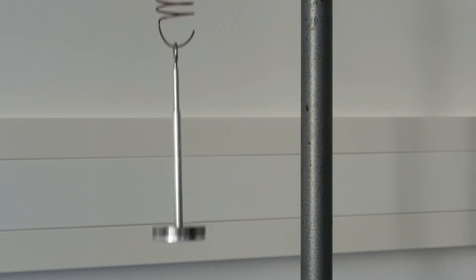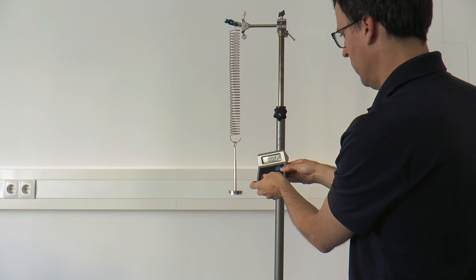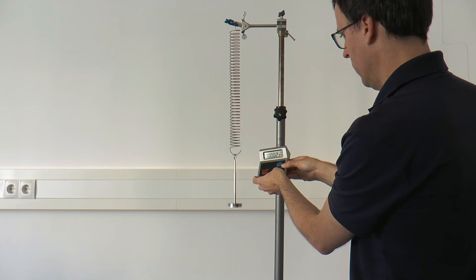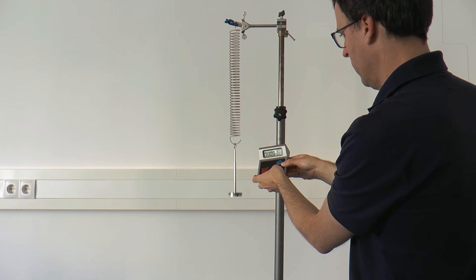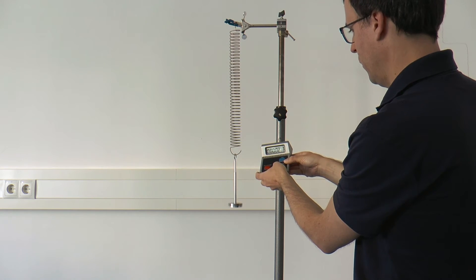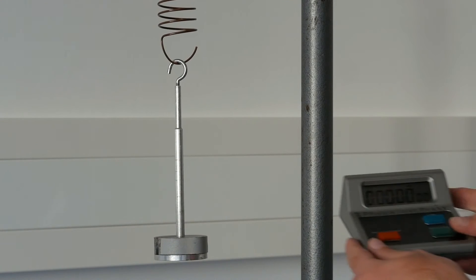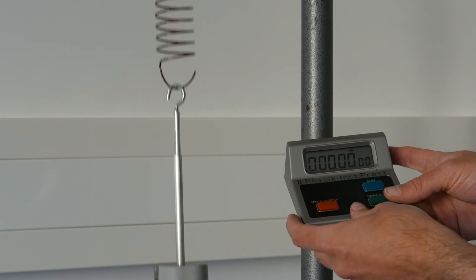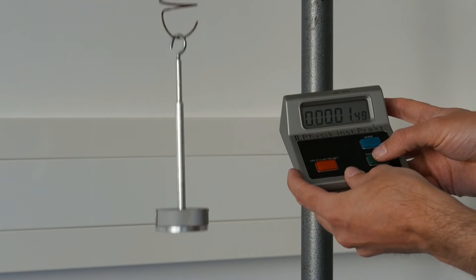Now measure the duration of five oscillations of the spring with the stopwatch yourself. Repeat this three times. We now attach the second weight. Measure five oscillations with this weight, repeating three times. Do the same for the third and the fourth weight.